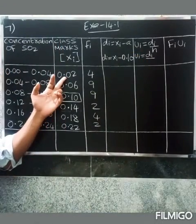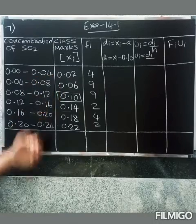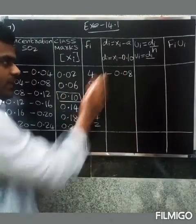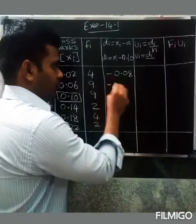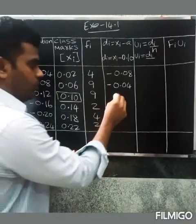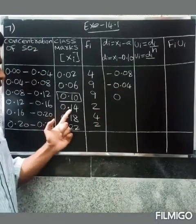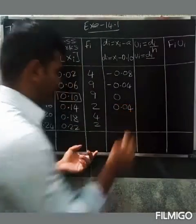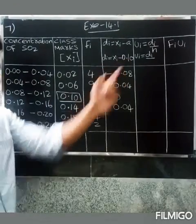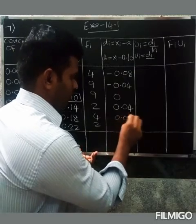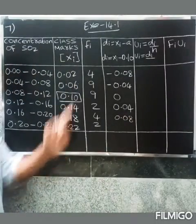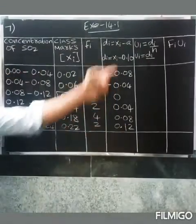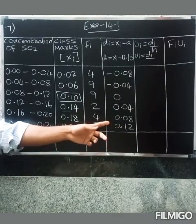Now we compute dᵢ = xᵢ minus A. First: 0.02 minus 0.10 = minus 0.08. Next: 0.06 minus 0.10 = minus 0.04. Then: 0.10 minus 0.10 = 0. Next: 0.14 minus 0.10 = 0.04. Then 0.18 gives 0.08, and 0.22 gives 0.12.